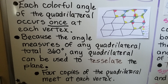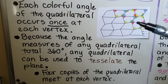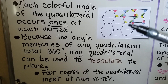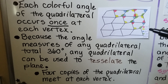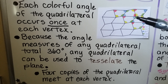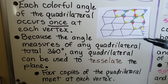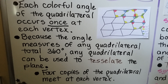Each colorful angle of the quadrilateral occurs once at each vertex — red, blue, green, yellow — repeating at every vertex. The red angle is 70 degrees, the yellow is 100 degrees, the blue is 60 degrees, and the green is 130 degrees, totaling 360 degrees. Because the angle measures of any quadrilateral total 360 degrees, any quadrilateral can be used to tessellate the plane, with four copies meeting at each vertex.